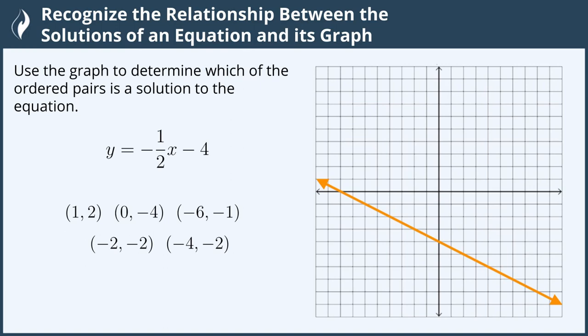Hi everyone! In this video we will recognize the relationship between the solutions of an equation and its graph. Use the graph to determine which of the ordered pairs is a solution to the equation. Our equation is y equals negative one-half x minus 4.